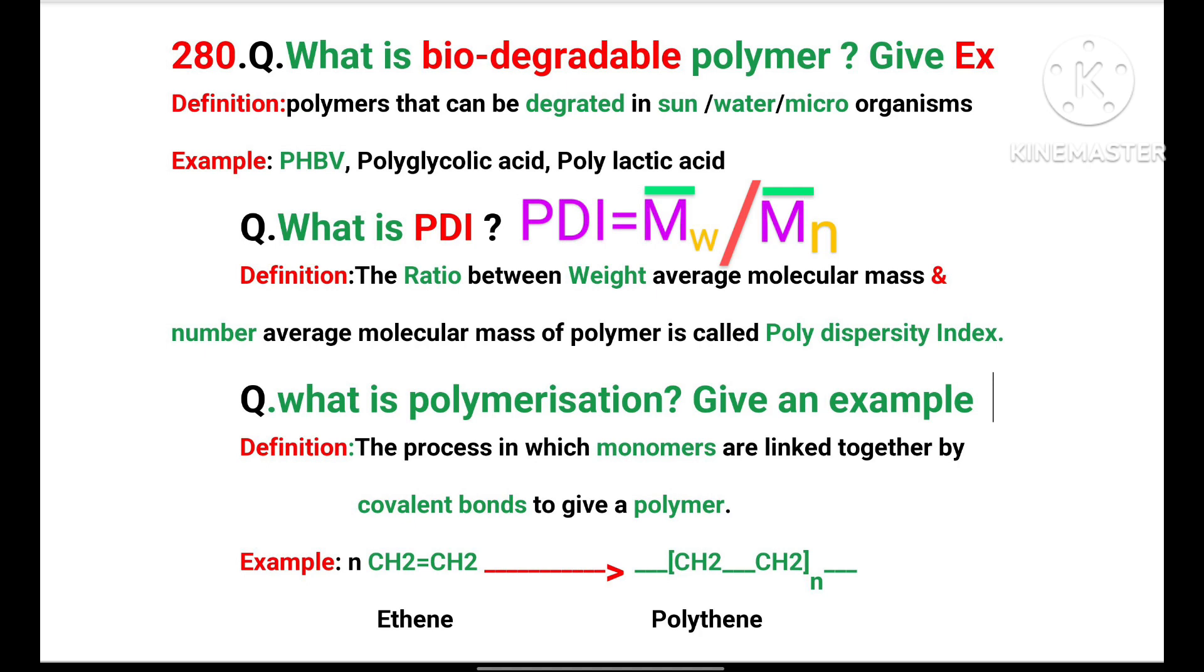Polydisparity Index. PDI is equal to M bar W by M bar N. If you write this formula in words, you will get the definition.